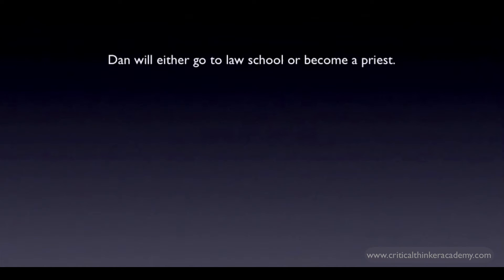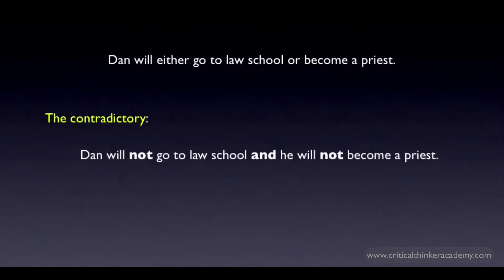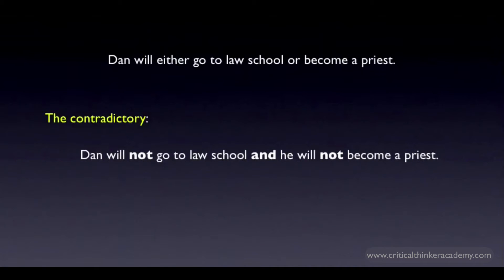So the contradictory looks like this: 'Dan will not go to law school and Dan will not become a priest.' The disjunction has become a conjunction with each of the conjuncts negated. This is structurally identical to the rule we saw in the previous video, with the 'or' and the 'and' switched.